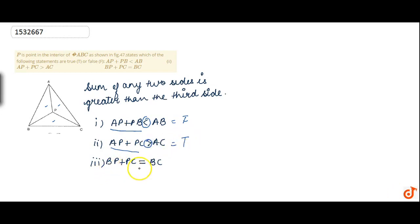Then third is BP plus PC equals BC. There are two sides of the sum here, but here it is equals to sign. So which side should be greater than? Therefore, this is also false.